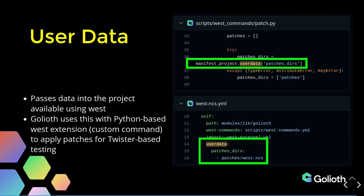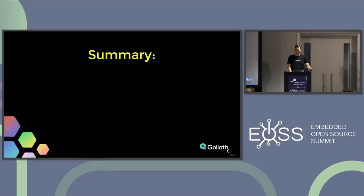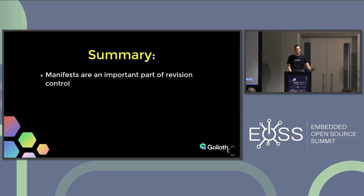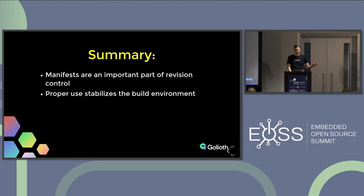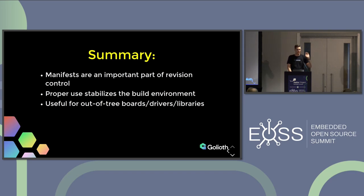That's enough on the advanced ones — let's go to the summary. When you think about revision control in Zephyr, you should definitely think about manifest files. Certainly the Zephyr project does, so why shouldn't we as application developers? It's going to stabilize your build environment, with a few caveats around the Zephyr SDK compilers. It's going to be useful for making reusable code very easily available — you just put a repository somewhere that you can use across multiple projects and call that in the manifest for each project. Those reasons alone are more than enough to get started, and I think you'll be happy that you did.